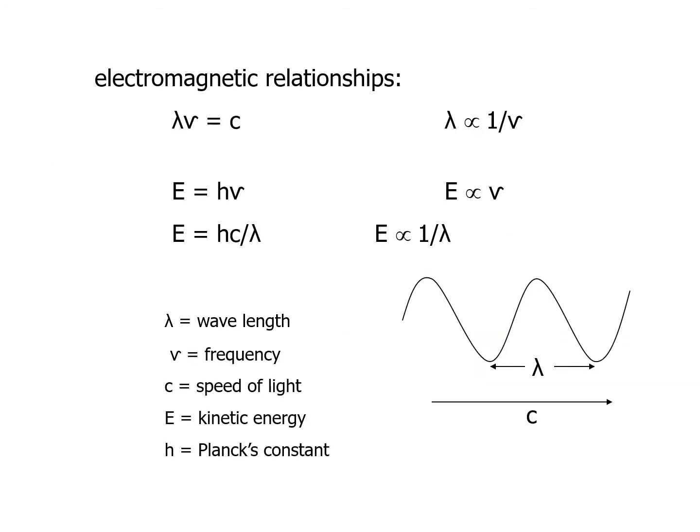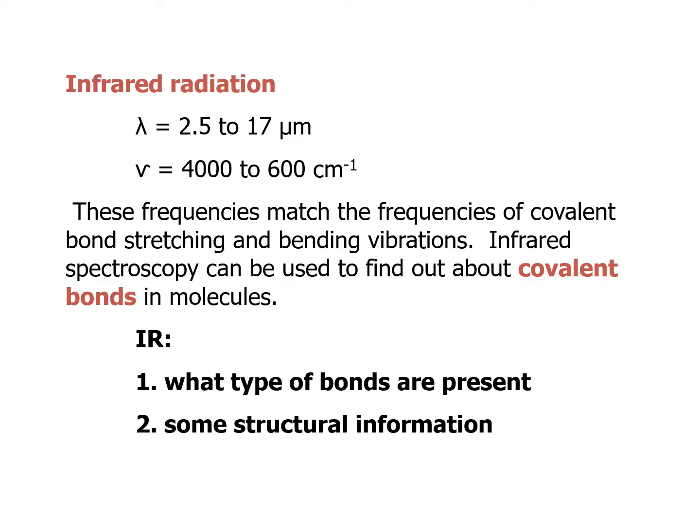Here are some equations related to electromagnetic radiation. We have lambda as the wavelength, frequency, C as the speed of light, E as the energy, and H as Planck's constant. The infrared radiation has a lambda from 2.5 to 17 micrometers and a frequency of 4,000 to 600 centimeters to the minus one. These frequencies match the frequencies of covalent bond stretching and bending vibrations, so infrared spectroscopy can be used to find out about covalent bonds in molecules.